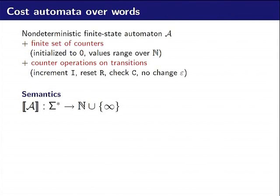How can we use an automaton to define such a function? We start from a nondeterministic automaton A but we add some counters initialized to zero. On each transition we can increment, reset, check, or do nothing on the counter. We use this automaton to define a function from words to N union infinity.